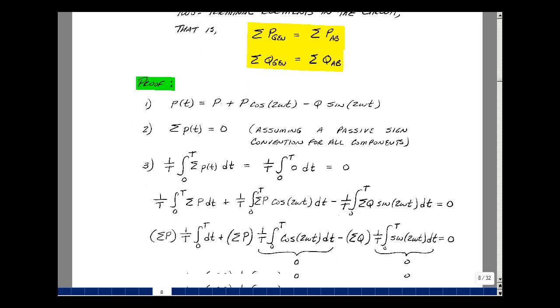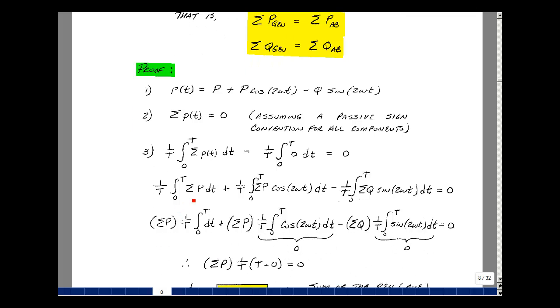Now, since the integral of the sum is the sum of the integral, we could exchange these two, bring the summation of P out, P is not a function of time, and left with 1 dt. Pull out the summation of P again, it's not a function of time. And I've got 1 over t integral from zero to t of the cosine of 2 omega t dt.